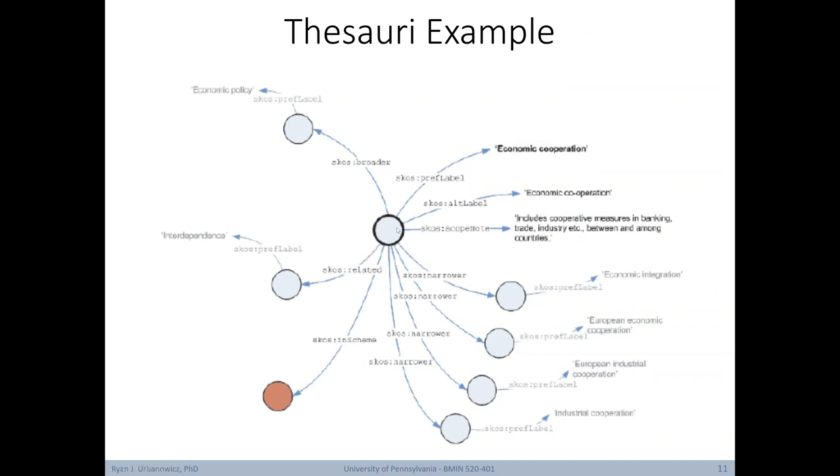Here's a quick example of a thesauri. This should look familiar to the semantic networks we covered in our last lecture. Here we have a central node with arcs describing different relationships to some terms and definitions. For instance, this node has a preferred label of economic cooperation, but an alternate label of economic cooperation with a hyphen. We also have an arc describing the definition of economic cooperation, including cooperative measures in banking, trade, industry between and among countries. Beyond relationships with term labels and definitions, this thesauri also can have a hierarchy of is-a relationships. For example, subclasses of economic cooperation include economic integration and industrial cooperation.